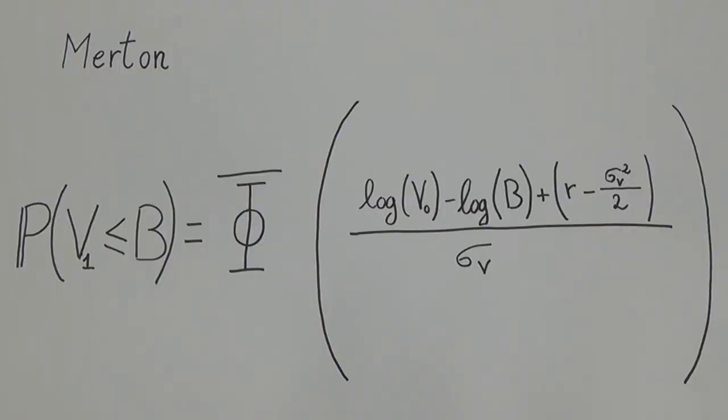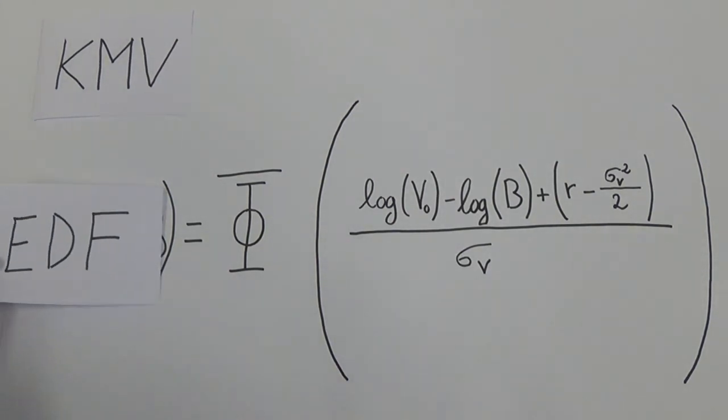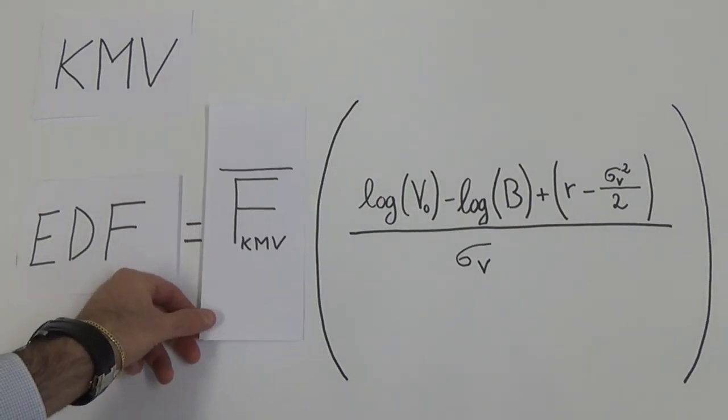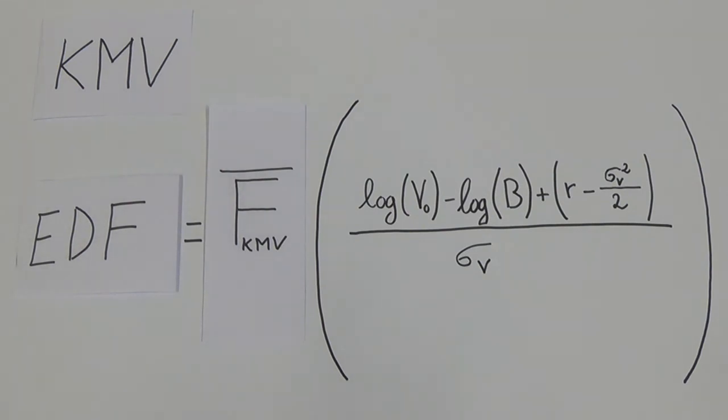This is our Merton's model once we express the probability of default in one year in terms of the survival function of a standard Gaussian. We now want to transform this model into the KMV one. This means that now we are interested in the EDF of our company. For this reason, we substitute phi bar with a decreasing function f, empirically estimated from a huge dataset of companies and defaults.